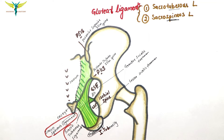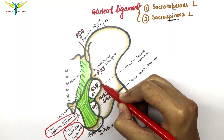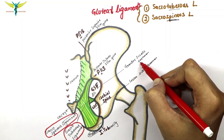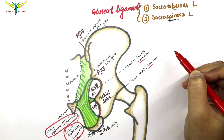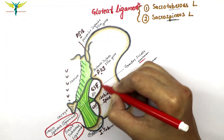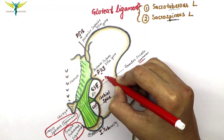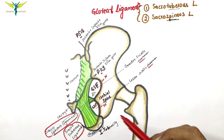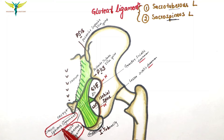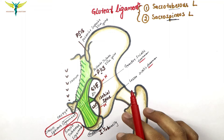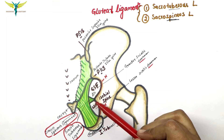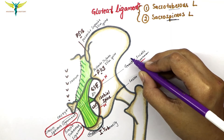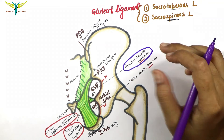The sacrospinous ligament and the sacrotuberous ligament together convert the greater sciatic notch and the lesser sciatic notch into the greater sciatic foramen and the lesser sciatic foramen. This curved shape is the greater sciatic notch, and here is the lesser sciatic notch. These two ligaments — the sacrospinous and sacrotuberous — convert the greater and lesser sciatic notches into the greater and lesser sciatic foramina.